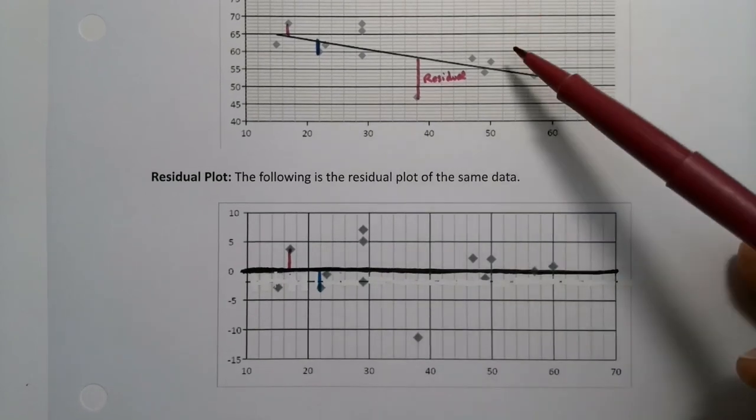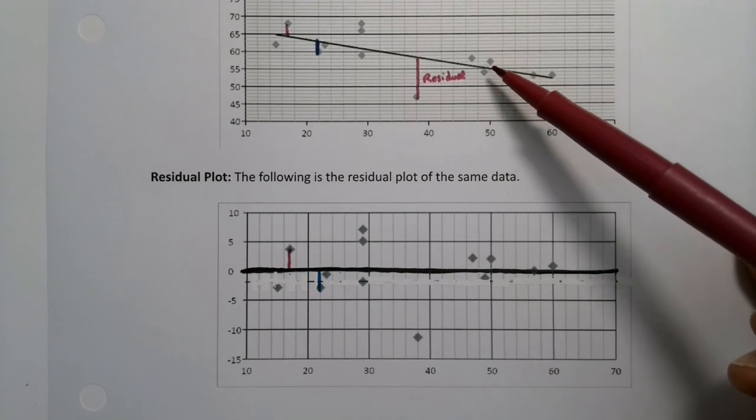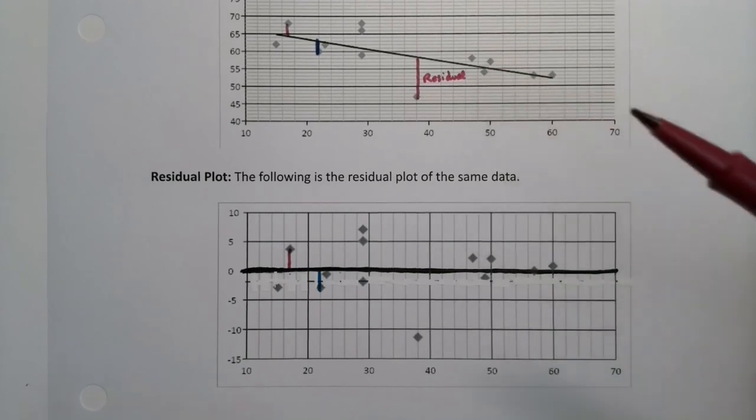So, it's a graph of the distances, the vertical distances from the dots to the line. Now, that said, what are you looking for when you're looking at this graph? Well, you're looking for something you're not really expecting.